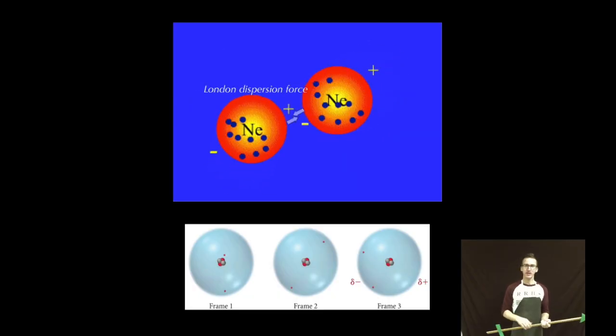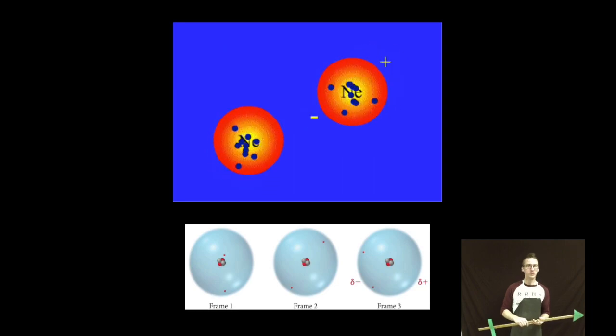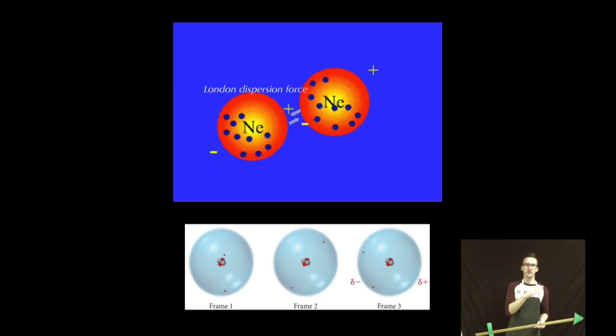So between neon and helium, neon will have stronger London dispersion forces than helium would, because it has more electrons to swing around and create larger instantaneous dipoles.